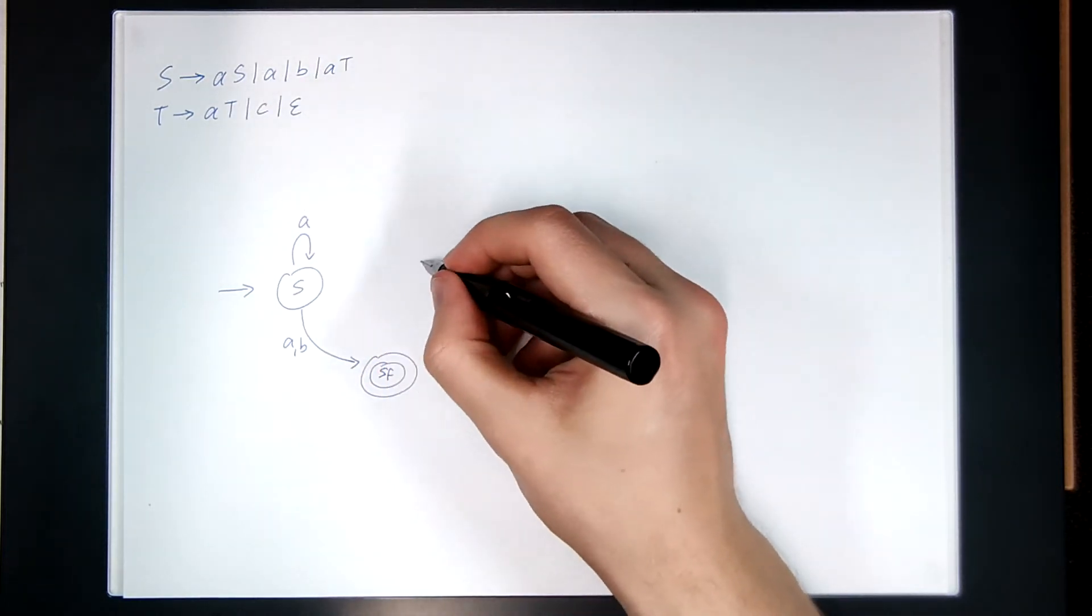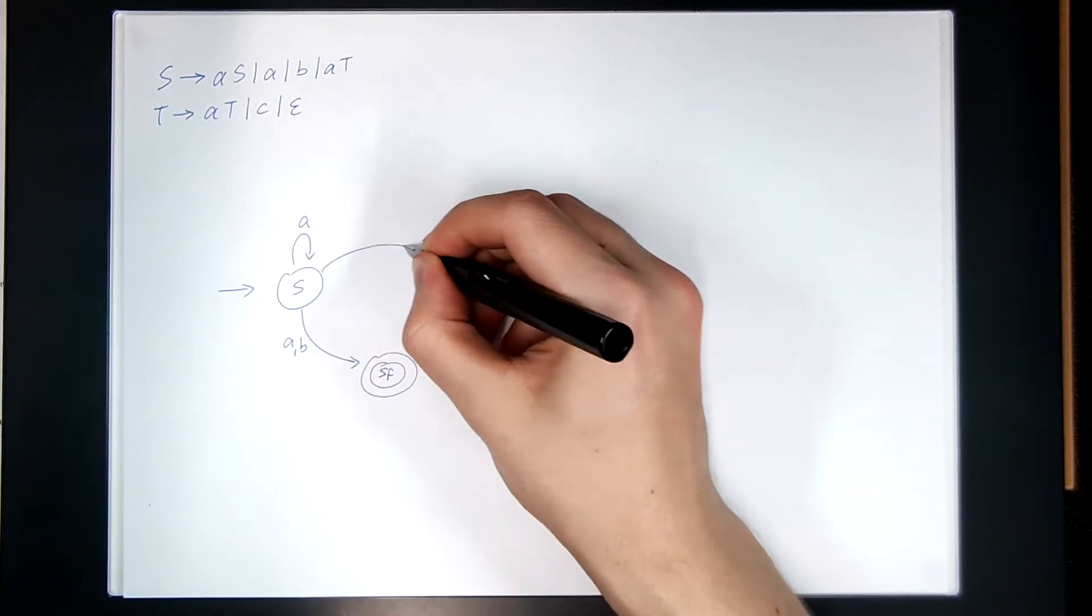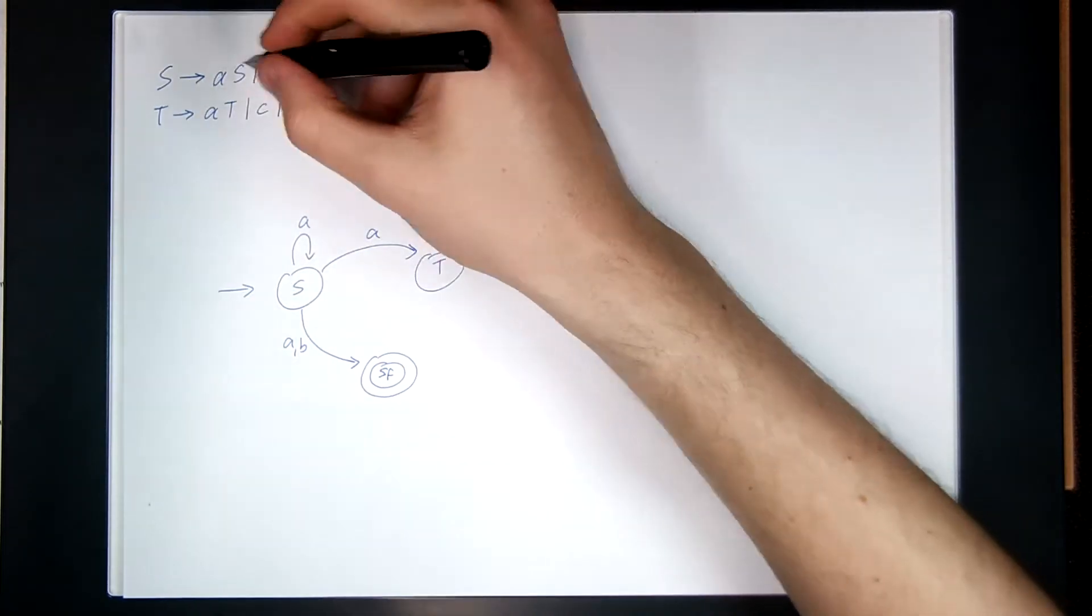I can also go to AT, so I have to create a new state T, read an A. I'm done with S, so let's look at T.